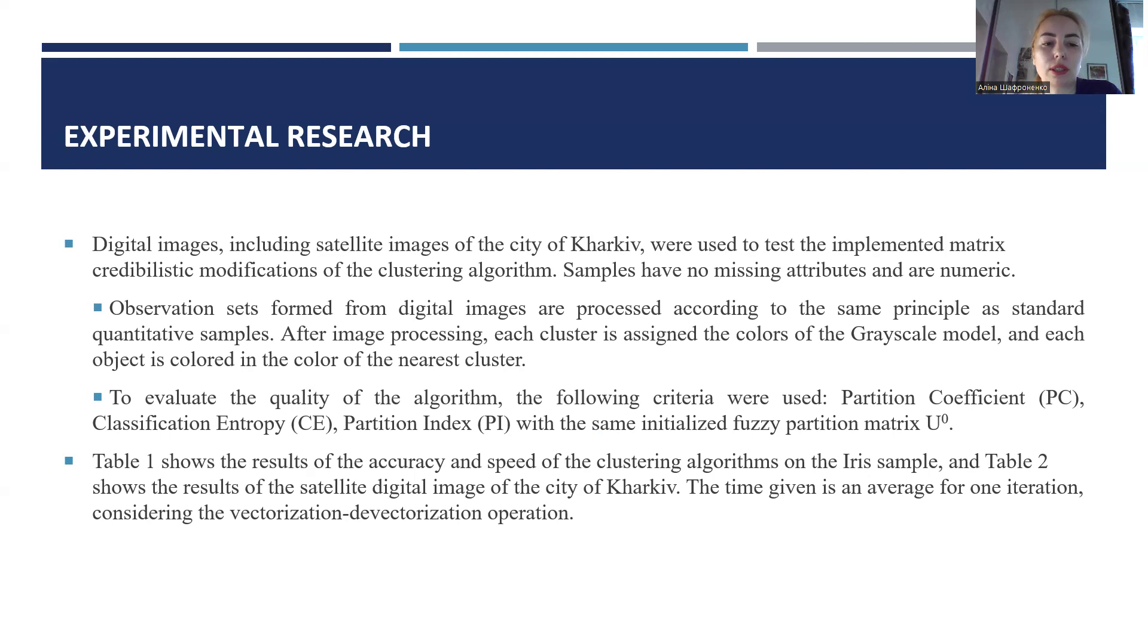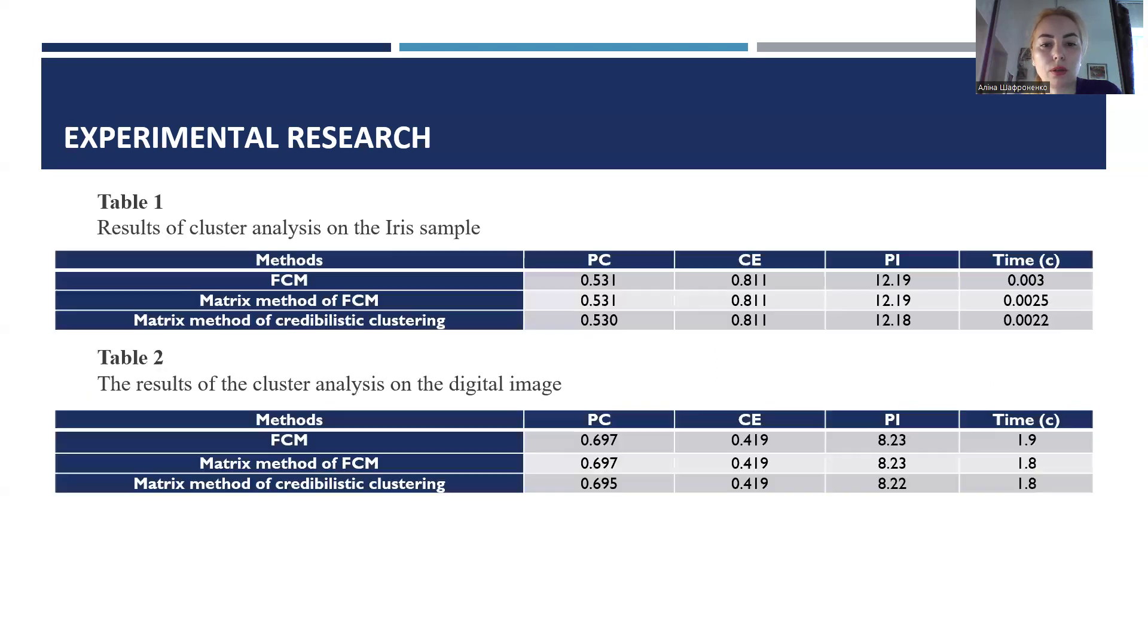Table 1 shows the result of the accuracy and speed of the clustering algorithms on the iris sample, and Table 2 shows the result on the satellite digital image of the city of Kharkiv. The time given is an average for one iteration, considering vectorization and de-vectorization operations. On the next slide, you can see Table 1 and Table 2. This is the result of cluster analysis on the iris sample and on the digital image.